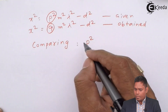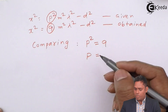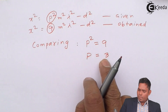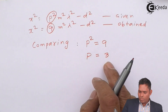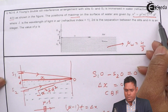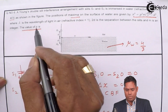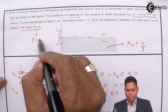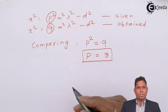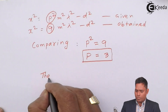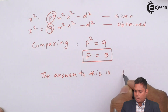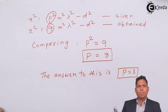Comparing the two equations, P² must equal 9, therefore P = 3 (taking the positive value). The answer to this question is P = 3.